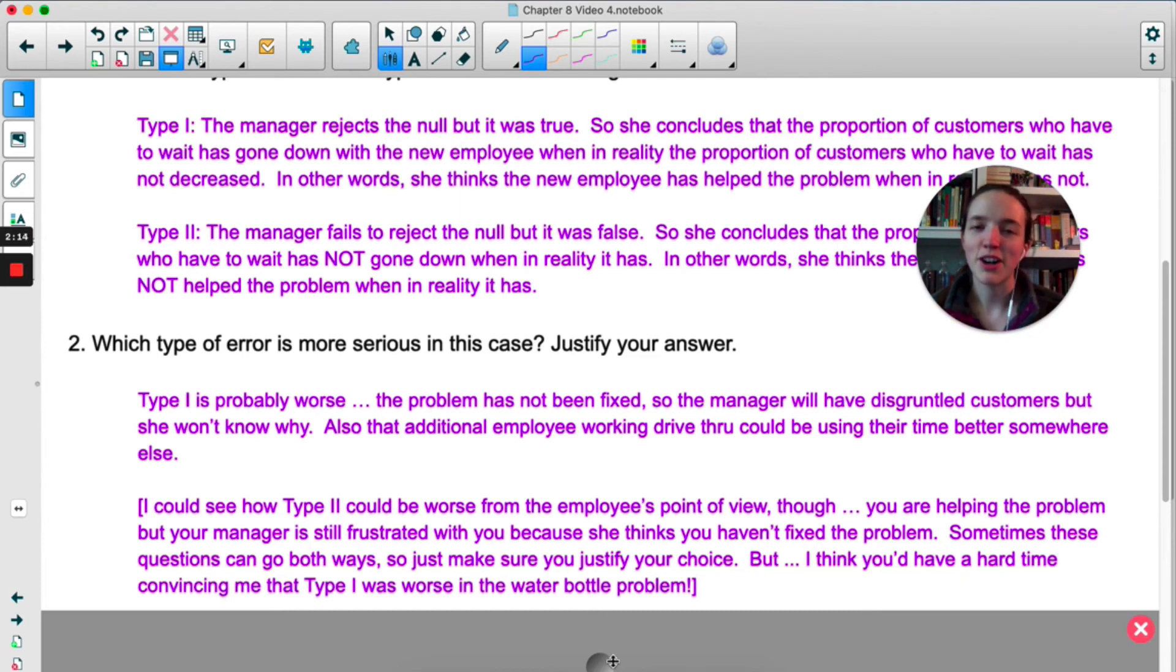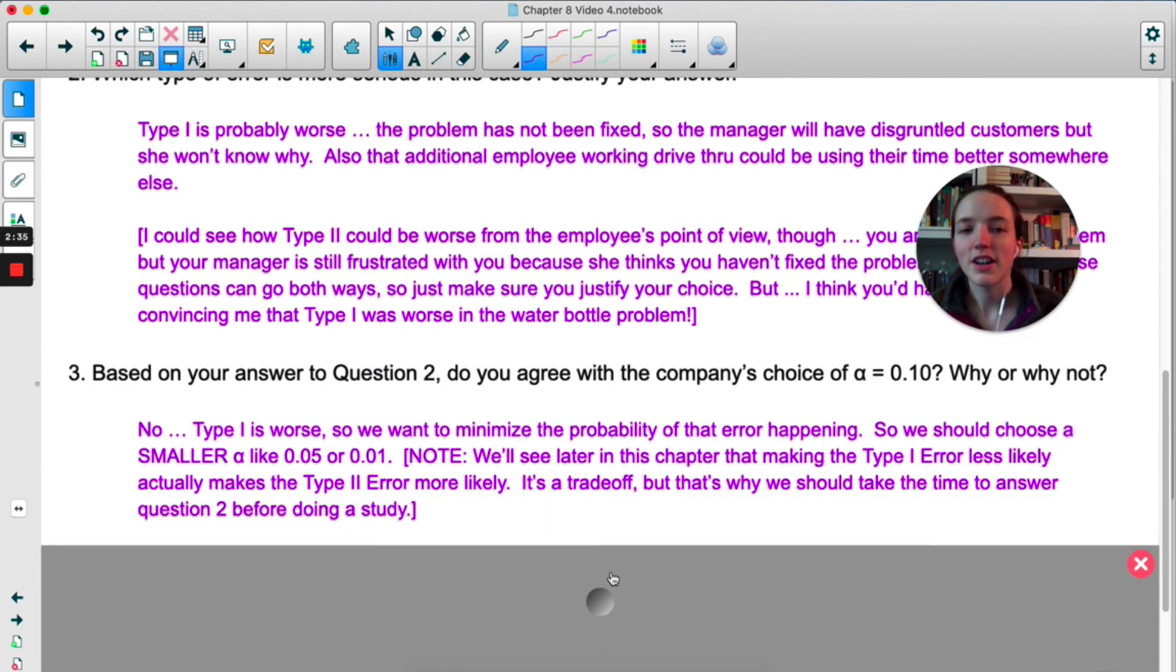As I wrote there, you'd have a hard time convincing me in the first problem that Type 1 was worse than Type 2. If one of them involves death, like that one is worse usually. Okay, so then based on question 2, do you agree with the company's choice of a significance level of 0.1? No, Type 1 is worse, so we would want to minimize the probability of that error happening, so we'd want to choose something smaller like 0.05 or 0.01. So I wrote a note in here, these are actually notes from last year when I was out, so this was me teaching my class even though I was at home sick. We see later in the chapter, which is the next video, that making Type 1 error less likely actually makes Type 2 error more likely. They're related, but that's why we have to decide which type is worse so that we can minimize the one that's worse.